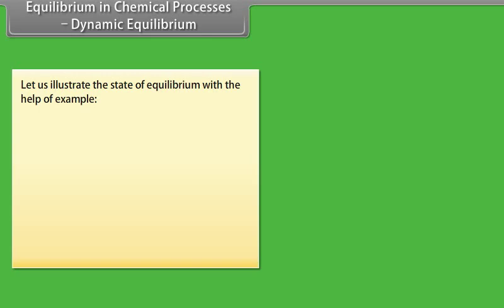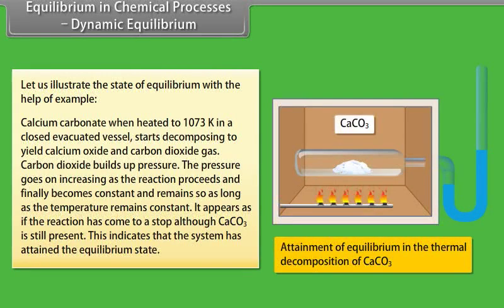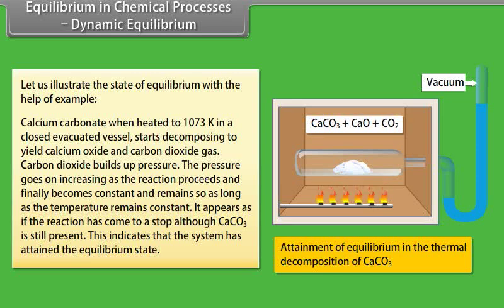Calcium carbonate, when heated to 1073 Kelvin in a closed evacuated vessel, starts decomposing to yield calcium oxide and carbon dioxide gas. Carbon dioxide builds up pressure, which goes on increasing as the reaction proceeds and finally becomes constant as long as temperature remains constant. It appears as if the reaction has stopped, although CaCO3 is still present — this indicates the system has attained the equilibrium state.